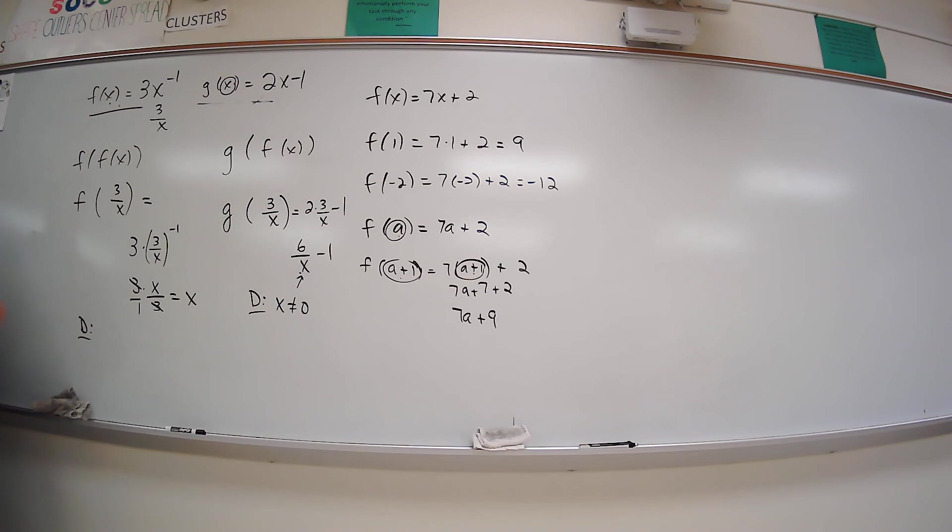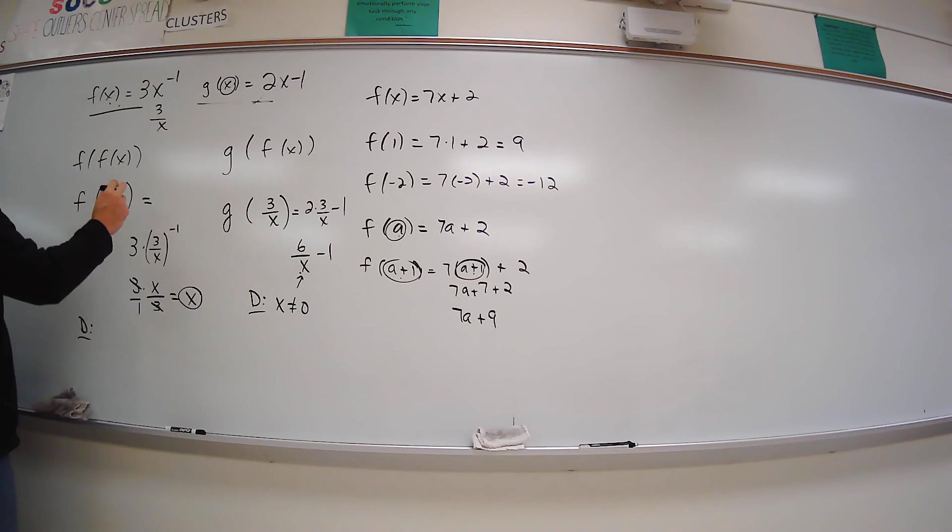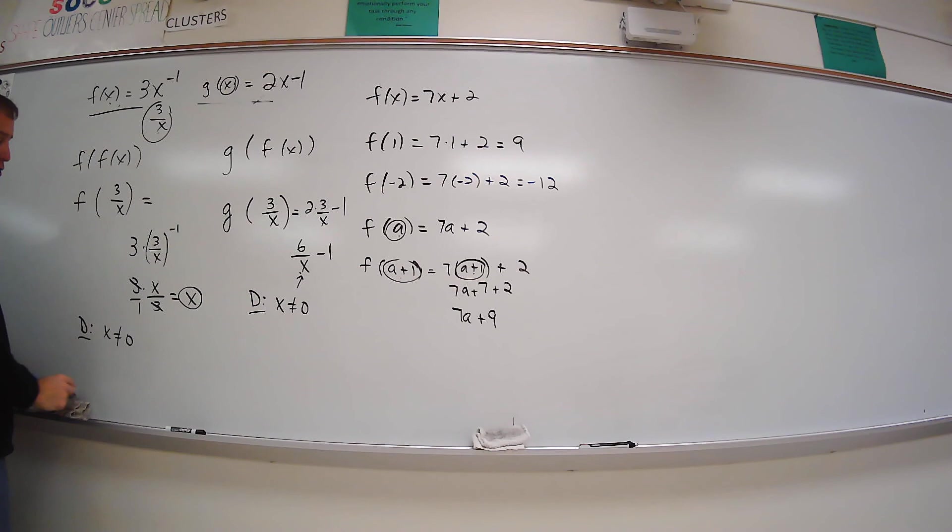Now, for my domain, I still have to go back and look. You know, you're going to say, well, the domain is x. Yeah, but when we started this off, we had 3 over x. So x can't be 0 at that. Just like in this one, x could be 0. Same thing here.